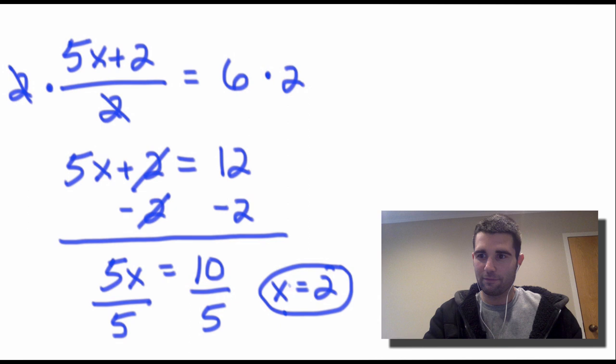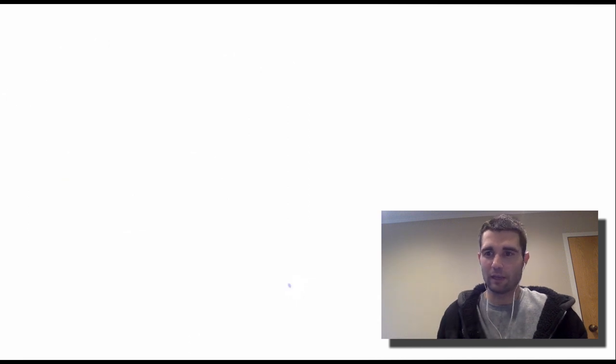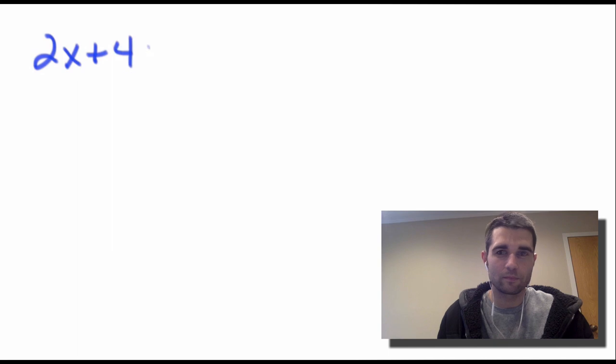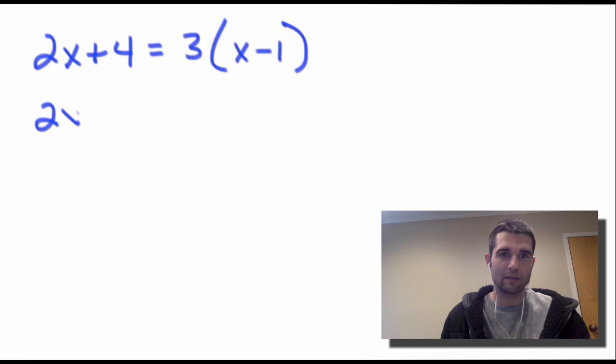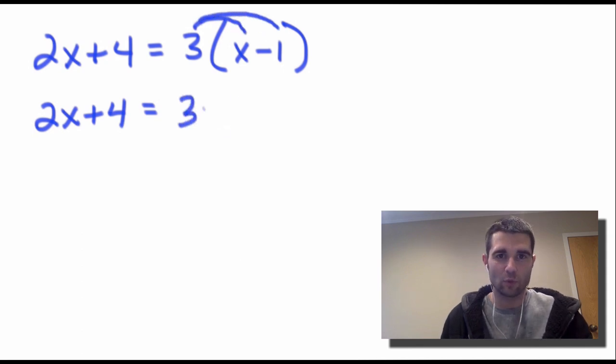The final equation we're going to take a look at today is 2x plus 4 is equal to 3 times the quantity x minus 1. In order to solve this, we're going to keep the left exactly as it is for the time being. Whenever you see a situation like this, this just means distribution. We're going to multiply the 3 into each piece. So what we're going to get here is 3x minus 3.